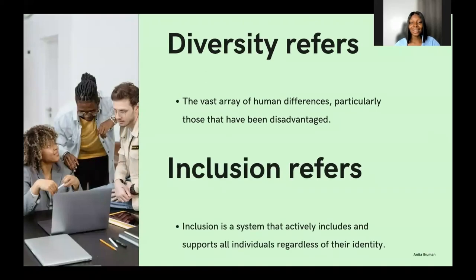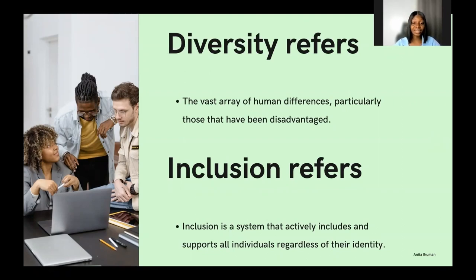Diversity and inclusion are commonly discussed topics in open source — we see them in documentation and community chat platforms. Diversity refers to the vast array of human differences, particularly among those who have been disadvantaged. Unique attributes could be in appearances, beliefs, or location — all of these are classified as diversity. Inclusion is a system that actively includes and supports all of these diverse individuals, regardless of their differences or what they identify as.